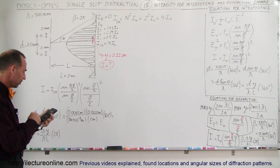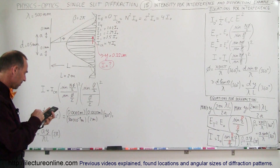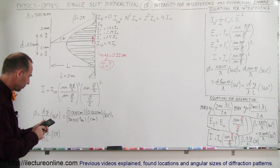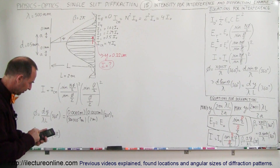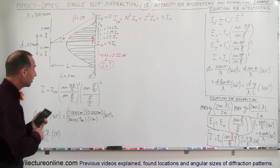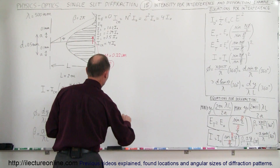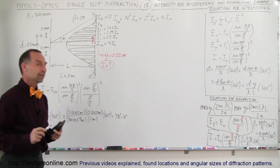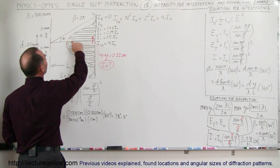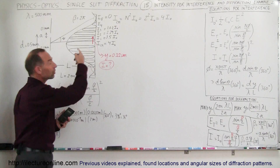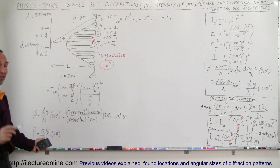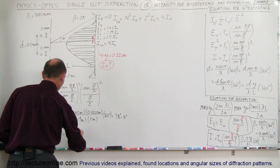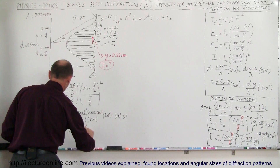So we get 0.0005 times 0.0022, divided by 500 × 10⁻⁹, divided by 2, and then multiply by 360 degrees, giving us 396 degrees. 396 degrees is the same as 36 degrees — that means we went one complete phase cycle, so we should be just past the first peak, pretty close to where the arrow shows us on the pattern.